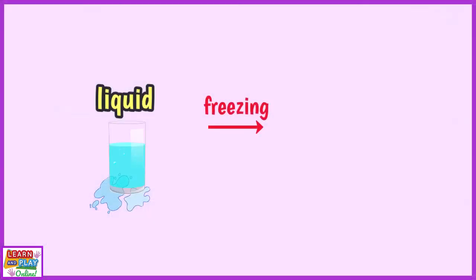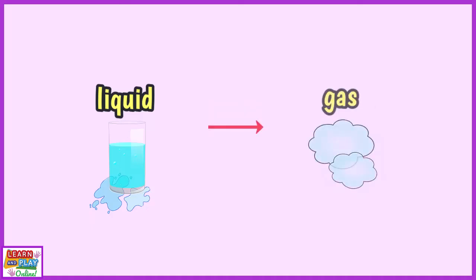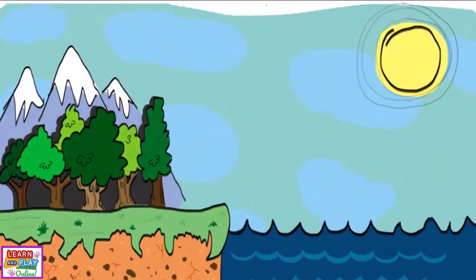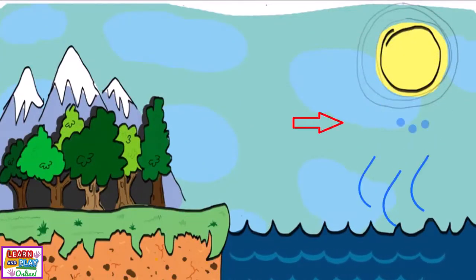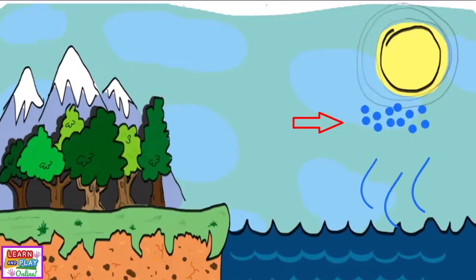So we have learned that by freezing liquid, it becomes solid matter, and by melting solid matter, we will get liquid matter. Now let's explore liquid matter changing into gas matter. When liquid matter transforms into gaseous matter, the process is called evaporation. And the water cycle is probably the best place to start with understanding this process. Evaporation is happening every day because the heat from the sun causes surface water from our oceans, rivers, and lakes to evaporate into water vapor.